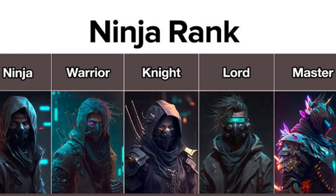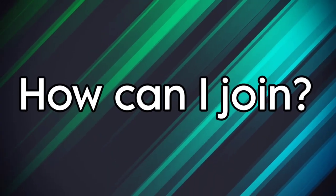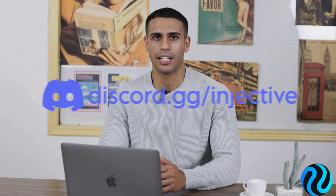The Ninja Masters Ambassador Program consists of five rankings: Ninja, Warrior, Knight, Lord, and Master. Every task you complete will earn you points, and gaining more points is how you can level up your ranking. Achieving a higher rank will unlock more rewards and benefits. A complete list of level rewards can be found on the official website.